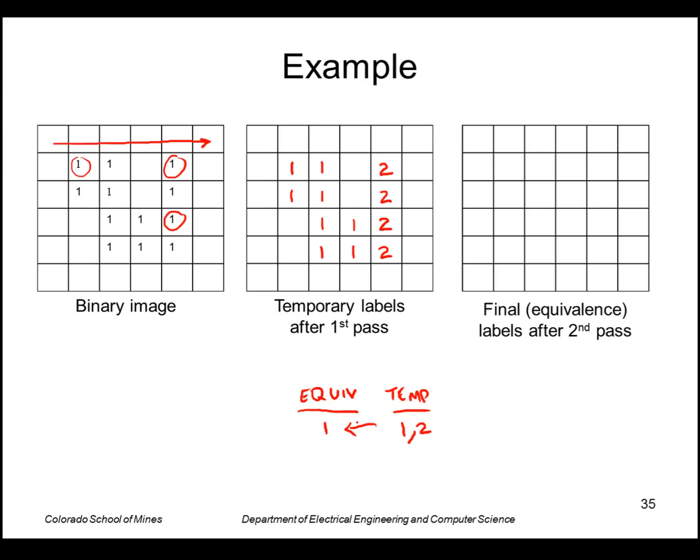So using this table I go through the temporary label image and I replace all of the ones and twos with a one. So those twos now become a one. So I've discovered basically that all of these pixels belong to the same region.